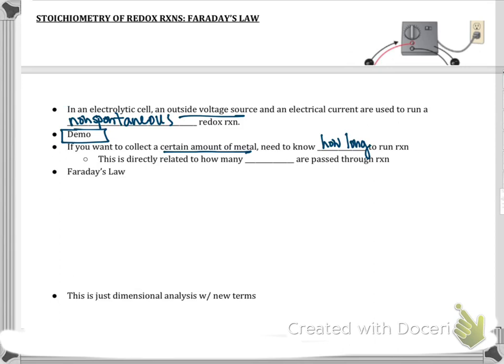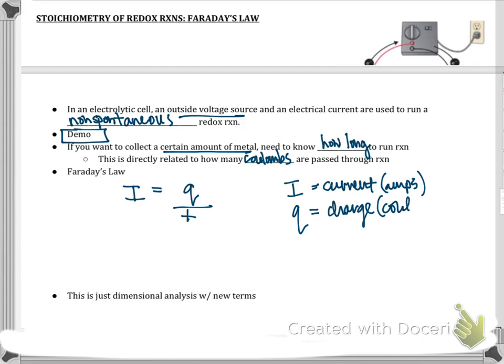How long to run the reaction is directly related to how many coulombs, that's units of charge, are being passed through the reaction. And Faraday's law defines that for us. Here's Faraday's law, it says I equals Q divided by T. So I, if we think back to physical science, that's current in amps. Q is charge in coulombs. And then T is time in seconds.